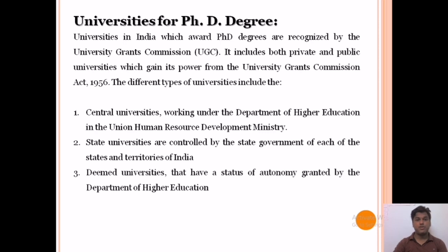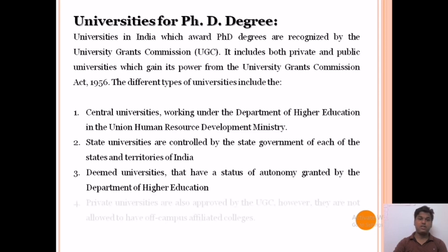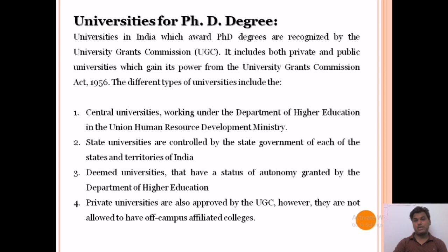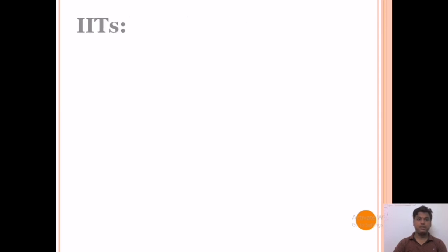The different types of universities include: first, Central Universities, which work under the Department of Higher Education in the Union Human Resource Development Ministry; second, State Universities, controlled by the state government of each state and territory of India; third, Deemed Universities, which have autonomous status granted by the Department of Higher Education; and fourth, Private Universities, also approved by UGC, though they are not allowed to have off-campus affiliated colleges.